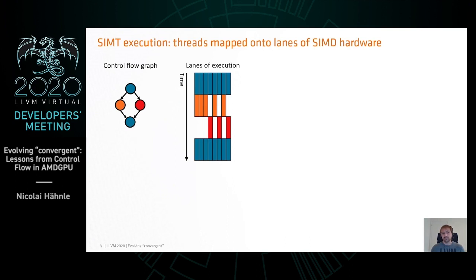If those threads don't follow the same path through their control flow graph, we have to do something. In the example, we have eight threads mapped to the same vector — five of them want to take the left path, three of them want to take the right path. So our program effectively has to go through both paths and mask lanes off as necessary.